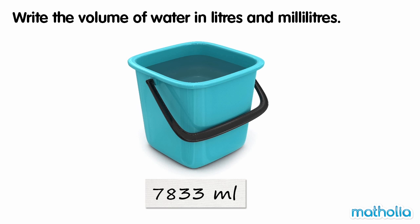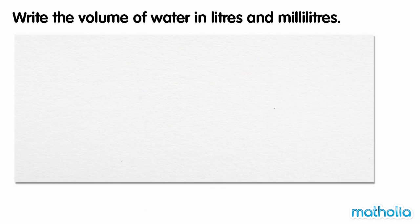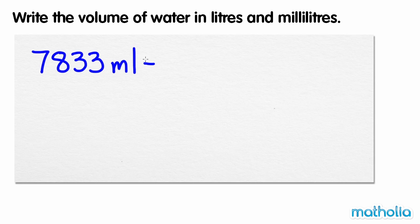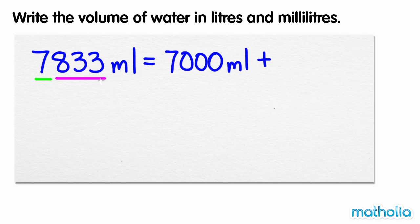Write the volume of water in litres and millilitres. The bucket contains 7,833 millilitres of water. We can rewrite 7,833 millilitres as 7,000 millilitres plus 833 millilitres.